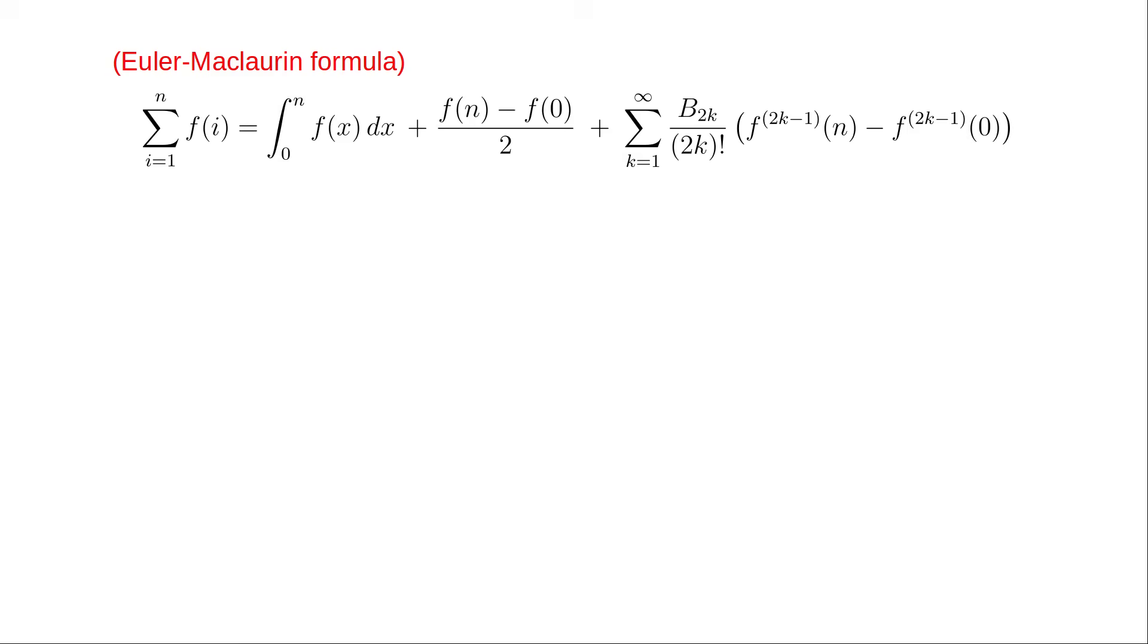If we look at what Ramanujan does, he uses the Euler-Maclaurin formula to expand the sum, and then he ignores all the terms that depend on n, which are assumed to diverge. So what he's left with is these constant terms that depend on the function value and derivatives at the lower limit.